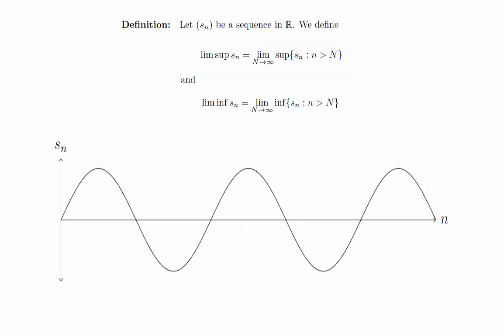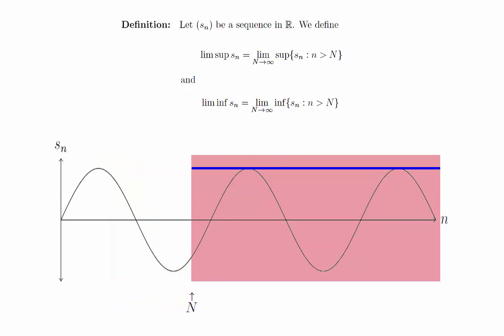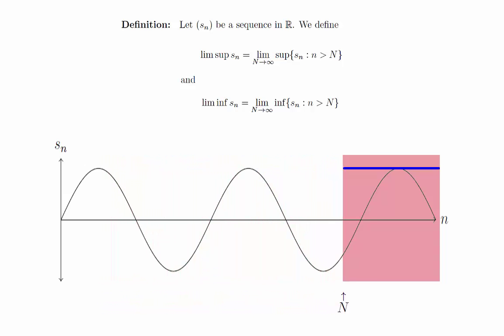For example, if you had a sequence that behaved like a sine curve, no matter what you do, you know that there is always going to be a peak of height 1 in front of you. This means the lim sup of that sequence is 1.